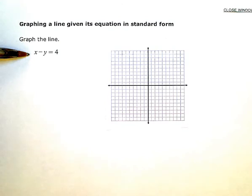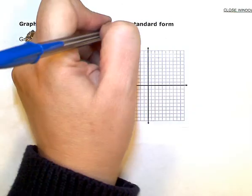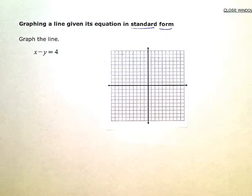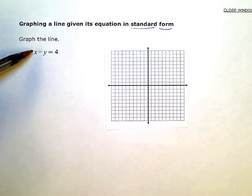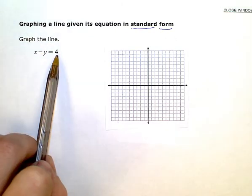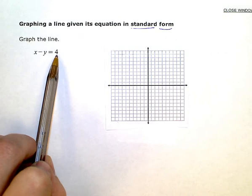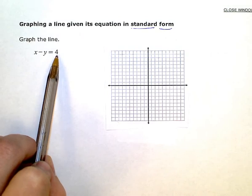Now this equation is in what we call standard form, which means the X and the Y are together on one side of the equation. Usually they're on the left like this. And then my constant term, or just plain old number with no variables, no X's or Y's, is on the other side of the equals.